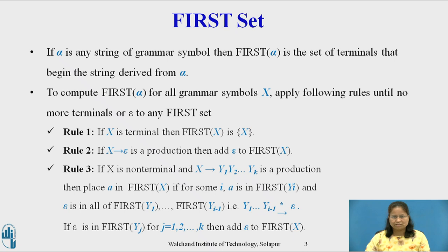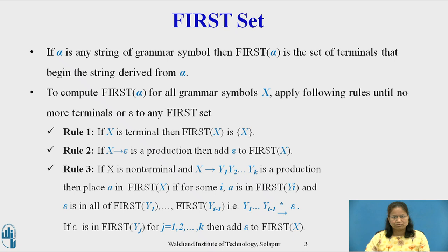Rule 3: If X is a non-terminal and X derives Y1 Y2 ... Yk is a production, then place terminal 'a' in First(X) if for some i, 'a' is in First(Yi) and epsilon is in all of First(Y1) through First(Y(i-1)), that is Y1 Y2 ... Y(i-1) derives epsilon in zero or more steps. If epsilon is in First(Yi) for j equal to 1 to k, then add epsilon to First(X).